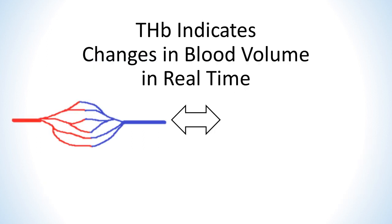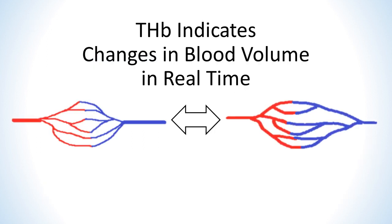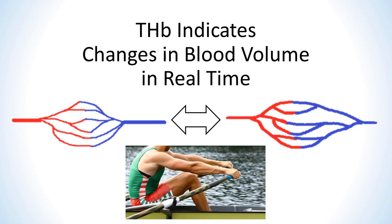The primary use for the THB metric is to indicate changes in blood volume. It can't measure blood volume in any absolute sense because many factors are not known absolutely, but it is useful to tell if blood volume is simply going up, down, or staying the same. If you move the sensor to a different position with a different fat layer thickness, the magnitude of the THB reading will differ. However, once the sensor is fixed, any changes in THB reading can be assumed to reflect changes in blood volume.